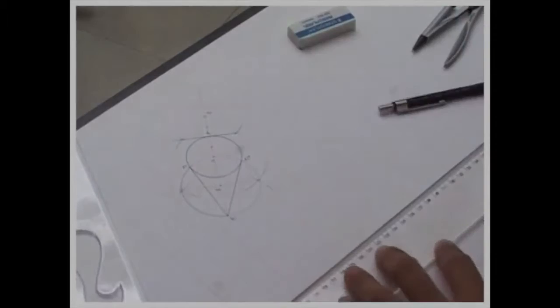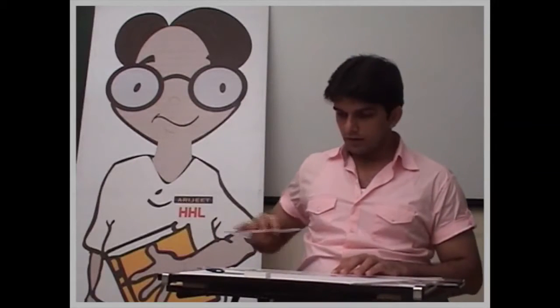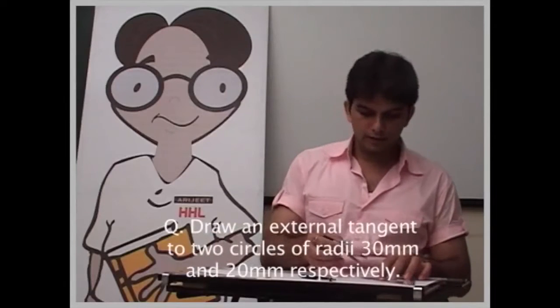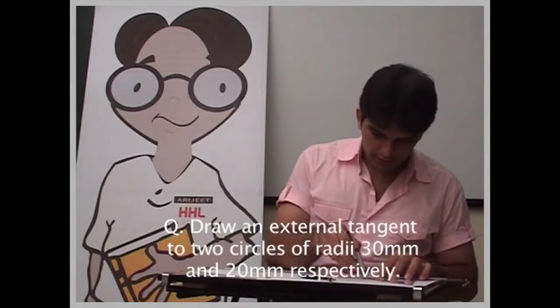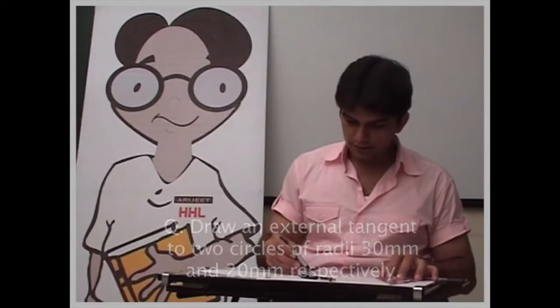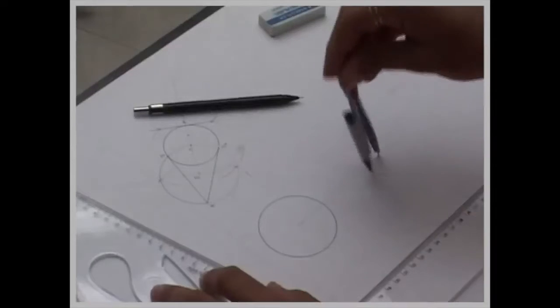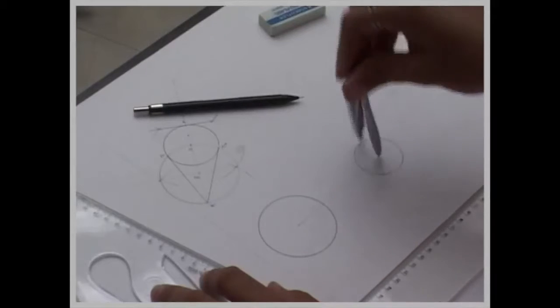We have two more tangents, that is external tangent and internal tangent. Now for external tangent, they will give you two radius. The bigger circle is of radius 30 and the small circle is of radius 20. Draw two circles.